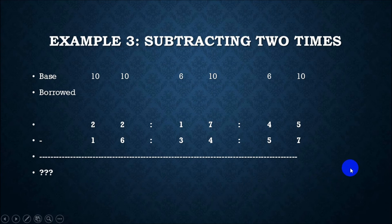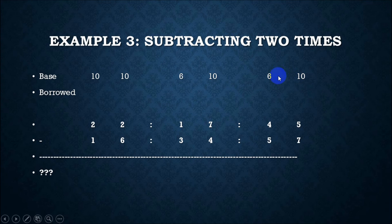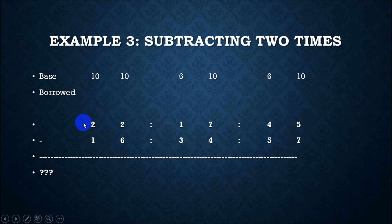Now we're going to subtract, and there's a trick to borrowing. Just like in regular subtraction we borrow 10, if you're in a base 6 column and you have to borrow, you're borrowing 6 — so you add 6 to that column. We're going to need to do some borrowing in this problem: 22 hours, 17 minutes, and 45 seconds, subtract 16 hours, 34 minutes, and 57 seconds.